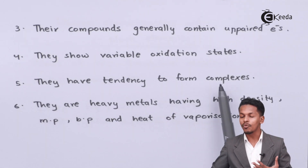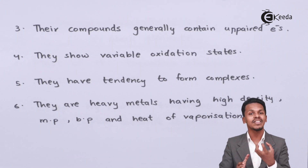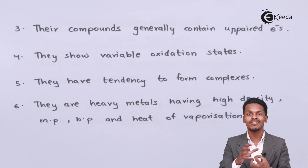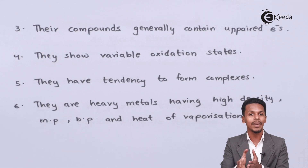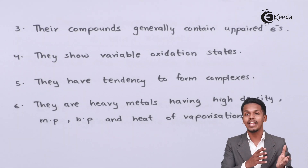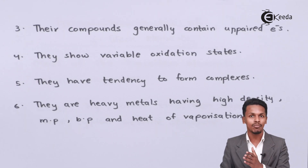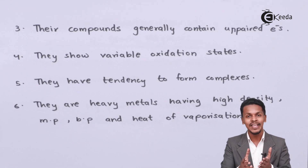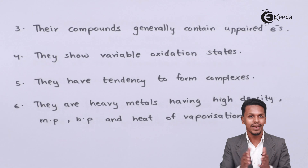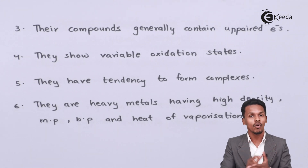They have the tendency to form complexes. Complexes are compounds which consist of a central metal as well as ligands. The central metal is basically the D-block element. We can't take S-block elements as central metals because the properties of S-block and D-block elements are different — it is the D-block elements that can form complexes.